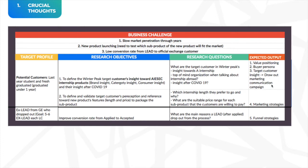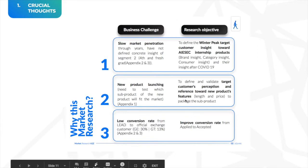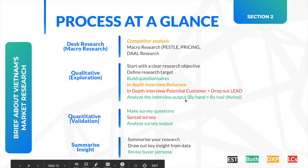The expected output was a buyer persona, a value proposition for the product in Vietnam, and customer insights — so I could draw out a marketing communication campaign. This is an example of being really clear about your business challenge, your objective, your questions, and your output.